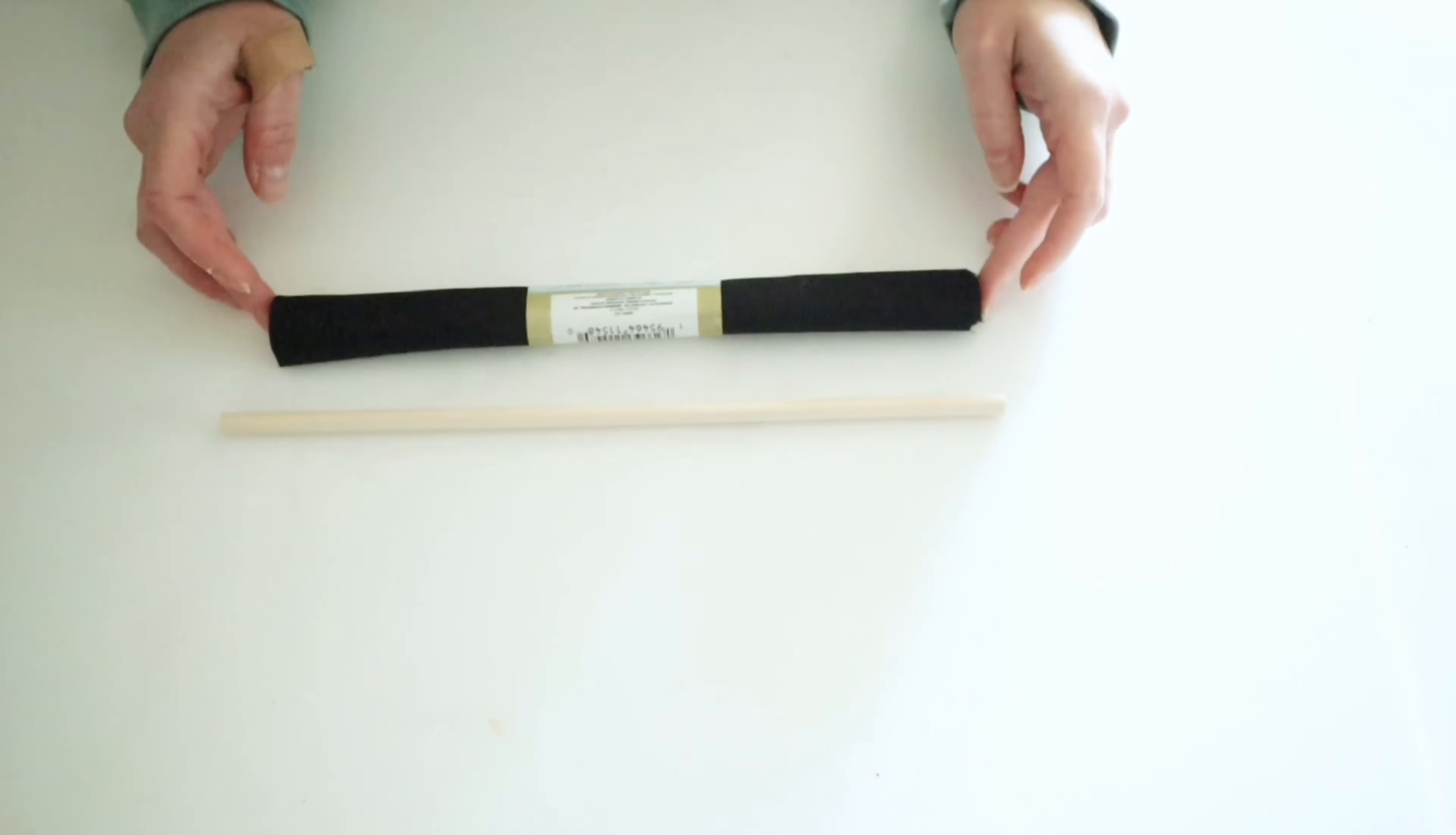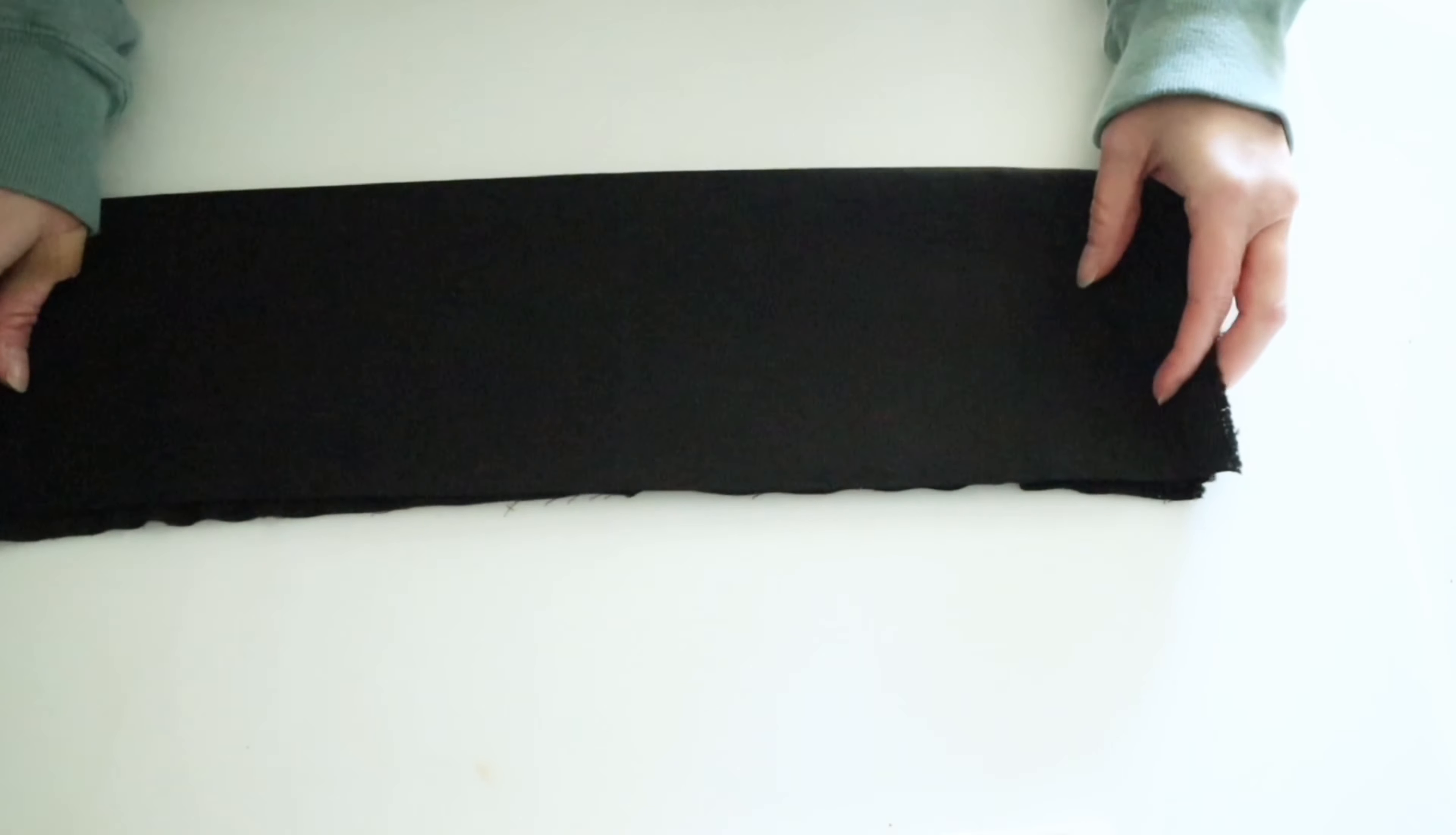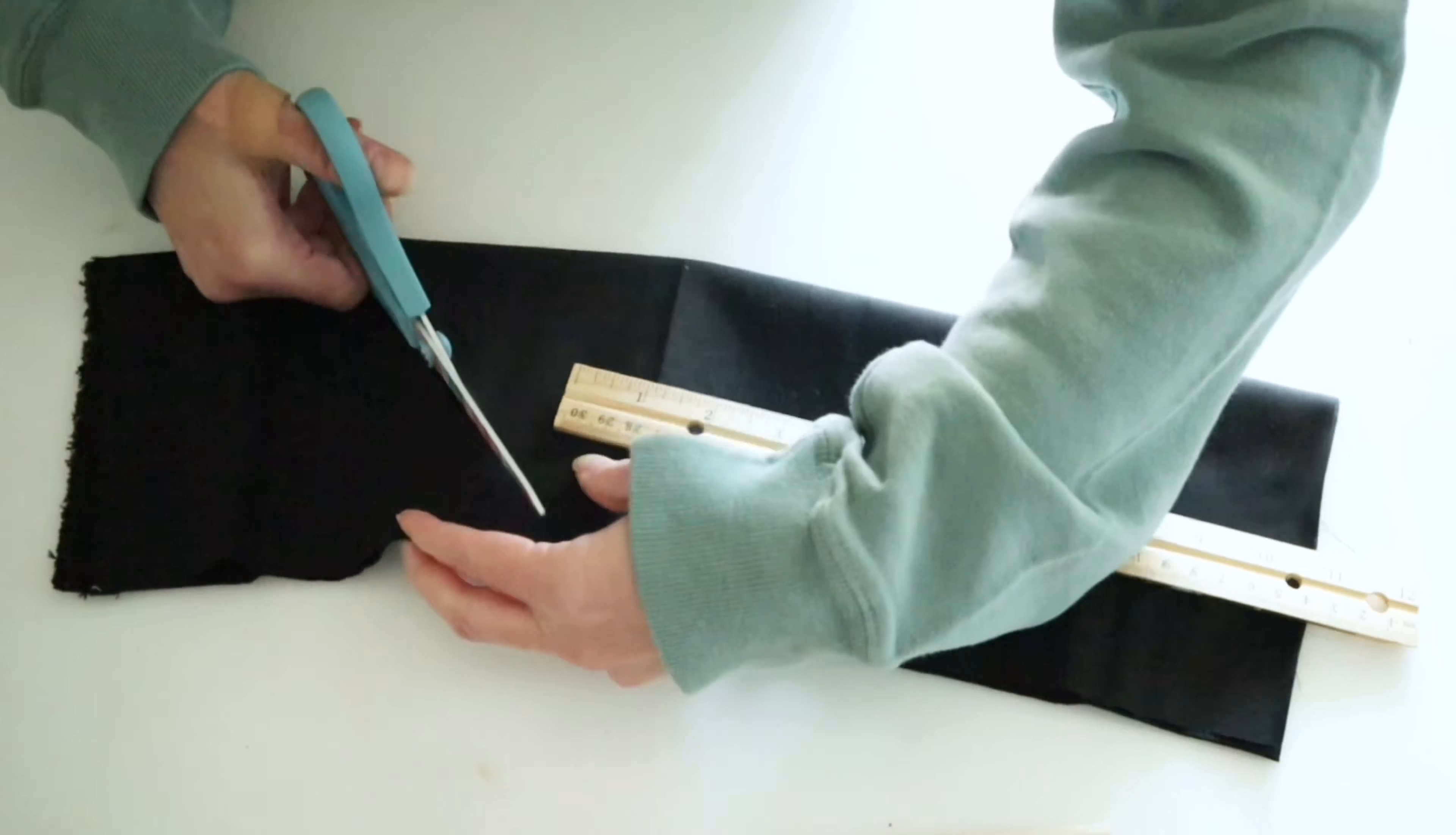For this next project, we're going to be making a simple Halloween banner using a Dollar Tree dowel rod and some of their black fabric. So the first thing you're going to want to do is go ahead and fold that fabric in half and then fold it over one more time. Then I'm going to take my ruler and just kind of measure out where I want it and I'm going to cut diagonal across that fabric.